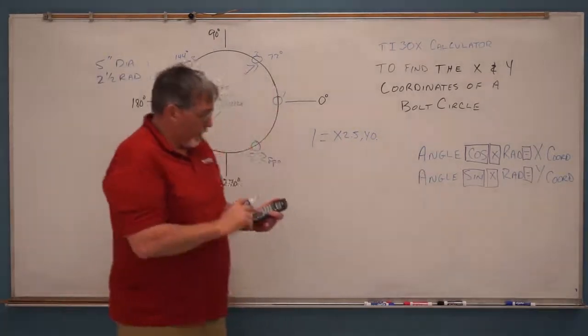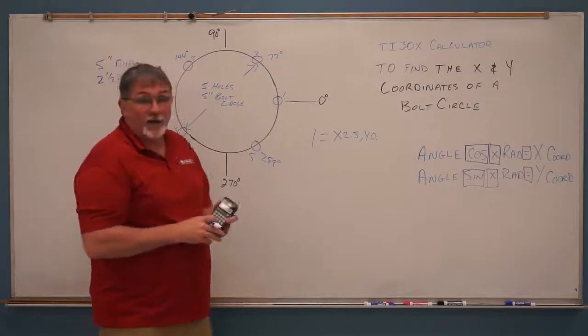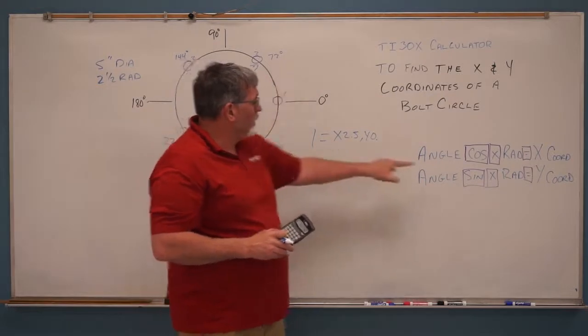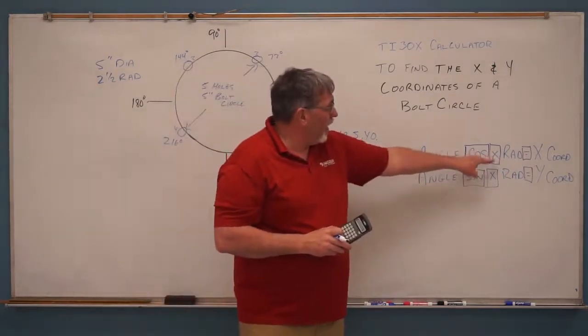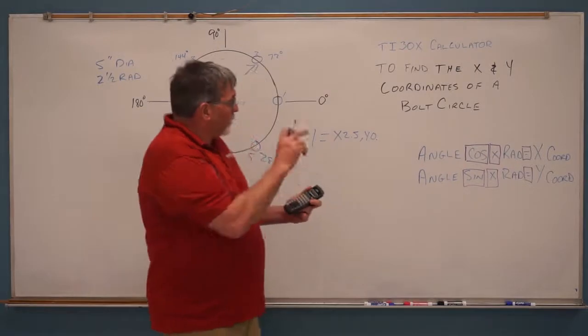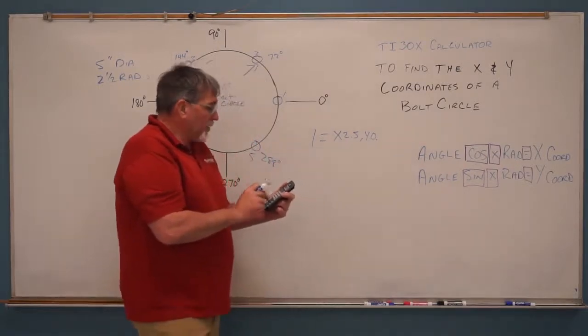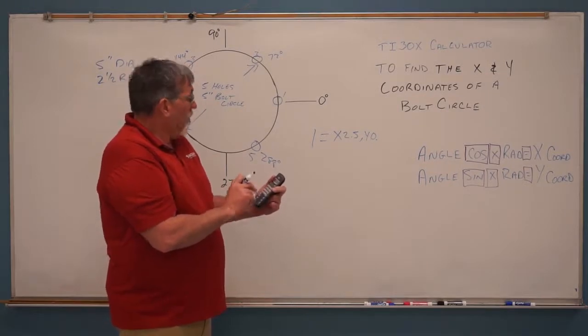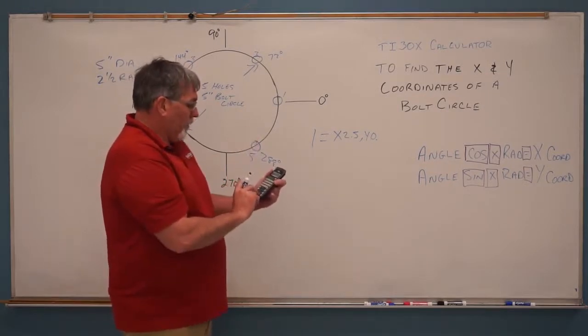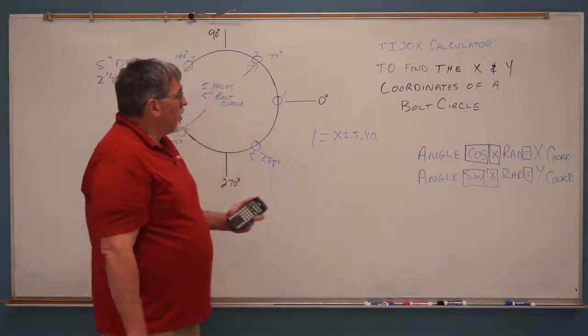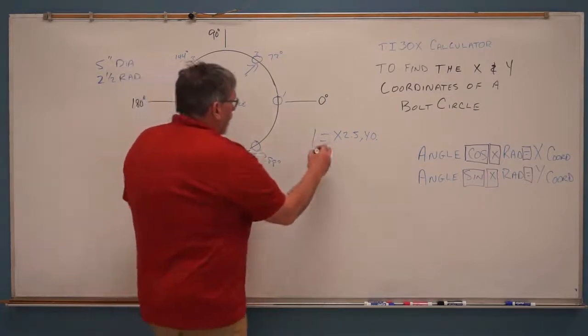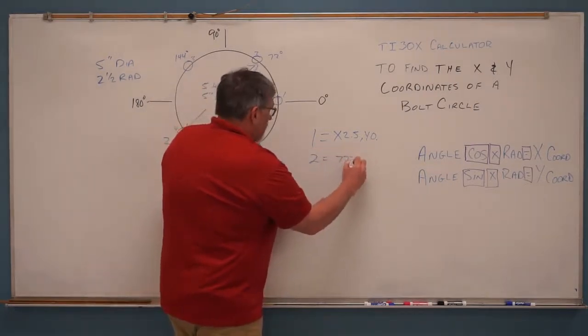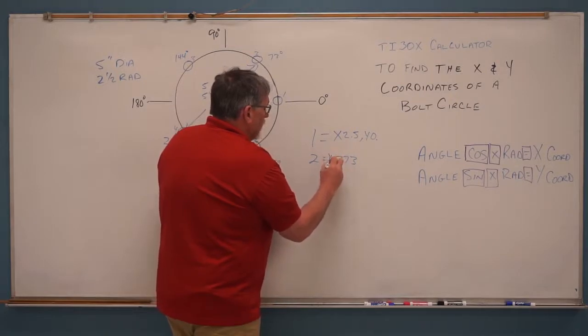So let's use our formula. And our formula for finding the x-coordinate position will be our angle, 72 degrees, cosine times the radius equals our x. So let's do that. 72 degrees cosine times the radius is 2.5 equals the x-axis coordinate. So our x-coordinate for hole number two is 0.773 inches in x.